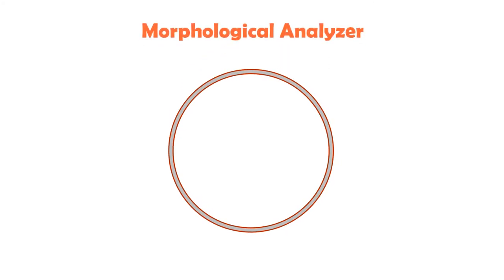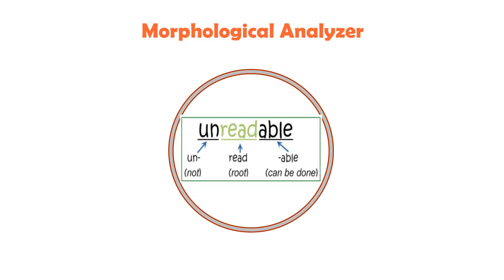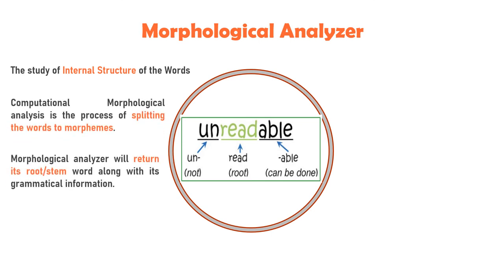Morphological Analyzer is the study of the internal structure of word formation. Computational morphological analysis is the process of splitting words into morphemes. A morphological analyzer returns the root or stem words along with grammatical information. Computational morphology deals with developing theories and techniques for computational analysis and synthesis of word forms. The morphological analyzer returns classification of word categories like noun, verb, adjectives, etc. Applications include tokenization, spelling and grammar checking, stemmers, word formations, search engines, text generation, and text to speech.